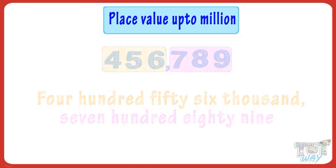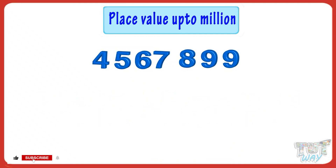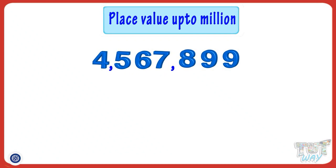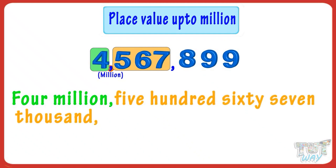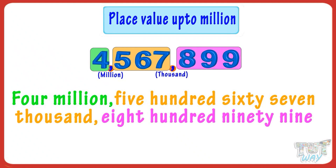Now let's take another example. Here we have a number. Starting from the right, four digits are left, so put a comma after three digits. Now let's read the number: it will be four million, as the name of the second comma from the right is million; five hundred sixty seven thousand, as the name of the first comma is thousand; and eight hundred ninety nine. So our number is four million five hundred and sixty seven thousand eight hundred and ninety nine.